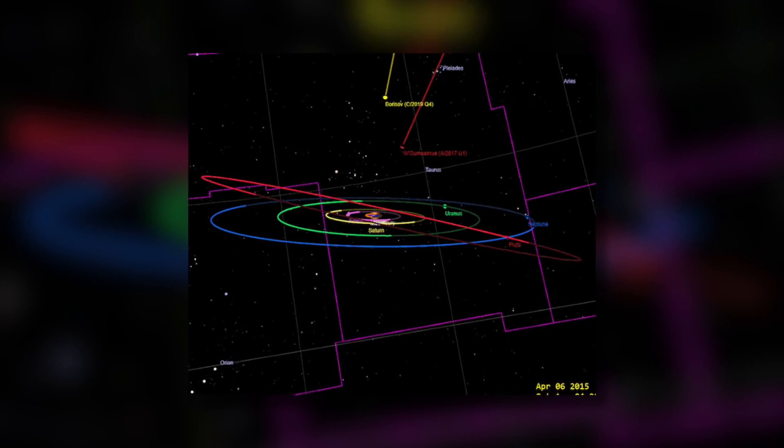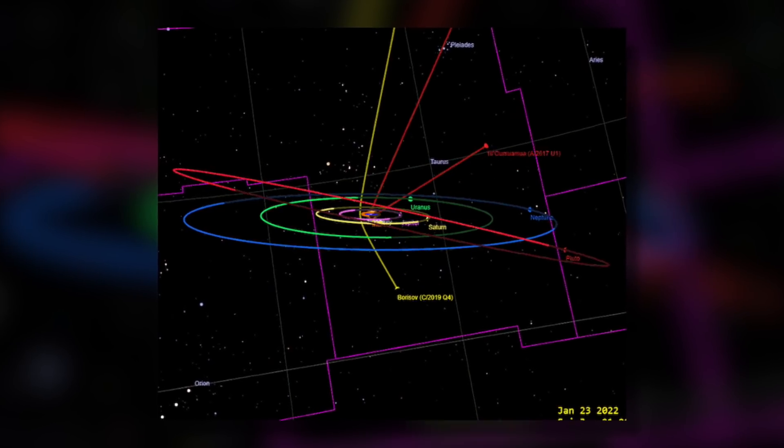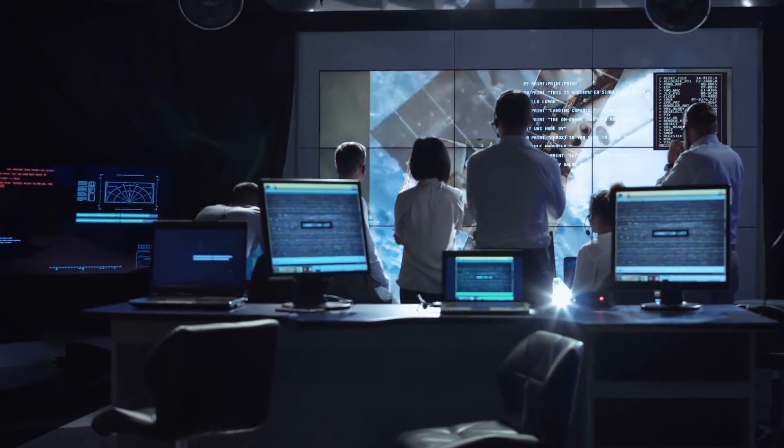NASA's stunning images show 2I Borisov as it orbits near a distant spiral galaxy. Especially fascinating is the bright blue center of the comet. 2I Borisov was discovered in August last year.